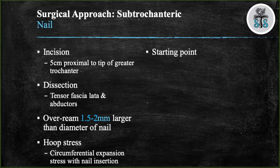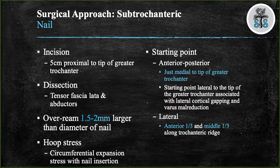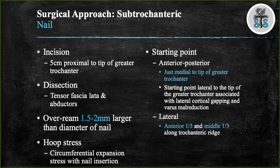The typical starting position needs to be just medial to the tip of the greater trochanter. If you have a starting point that is too lateral on the greater trochanter, it will lead to a varus malreduction and lateral cortical gapping. On your lateral x-ray, you want your starting point to be on the anterior third and middle third junction of the trochanteric ridge, cheating anteriorly since the femoral neck is anterior to the femoral shaft — this will help when placing your proximal screws in a straighter path into the femoral head. Lastly, you want to place a distal interlocking screw to provide rotational stability and prevent femoral shortening, with the only exception being when you are nailing prophylactically.